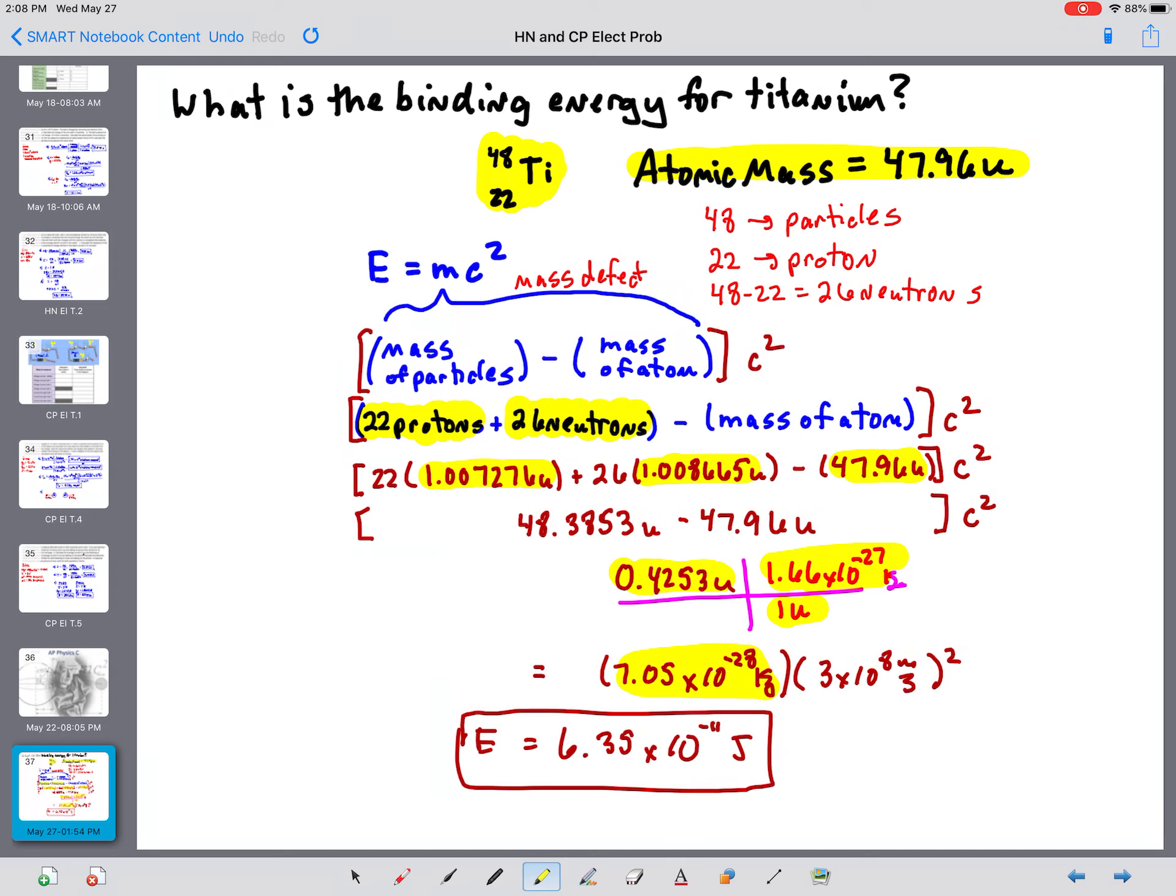And then the energy released in a fission-fusion reaction would be the difference in the mass between one side of the equation and the other side of the equation, converted into kilograms and plugged into E equals mc squared. Ponder.